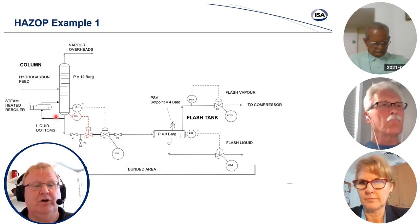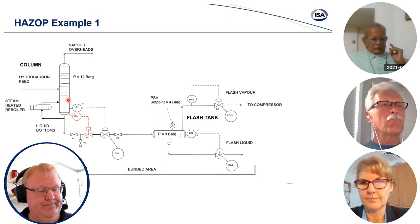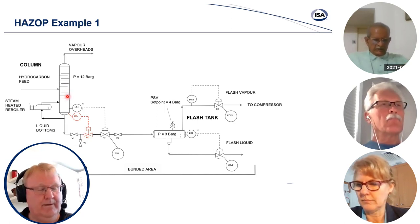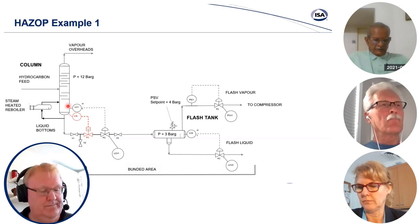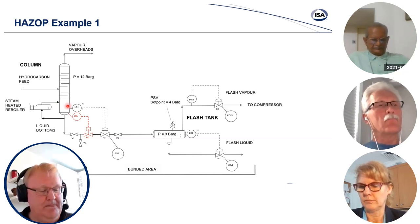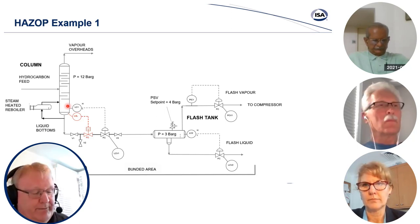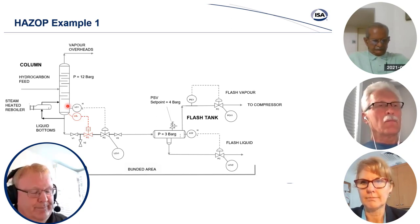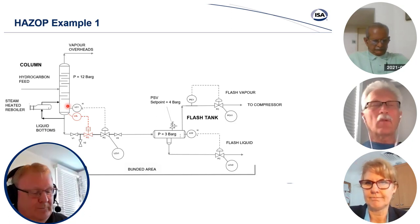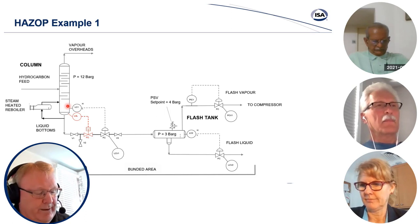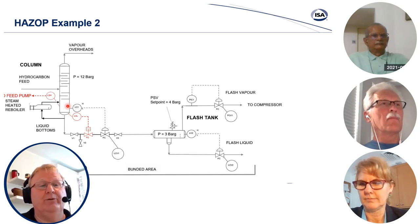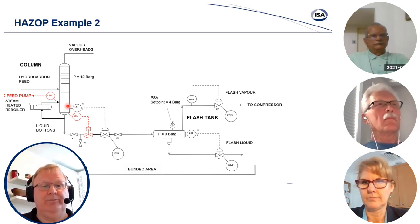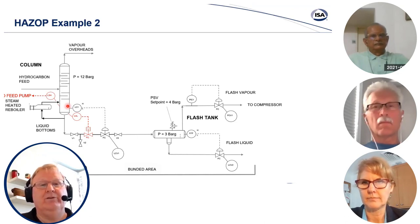The team decided these safeguards are not adequate to protect the column internals. The recommendation is to install a separate high-level switch on the column that will stop the column feed — that is, trip the upstream column feed pump. Everyone agreed with this suggestion. This high-level switch is marked on the P&ID, and the study proceeds to the next scenario.